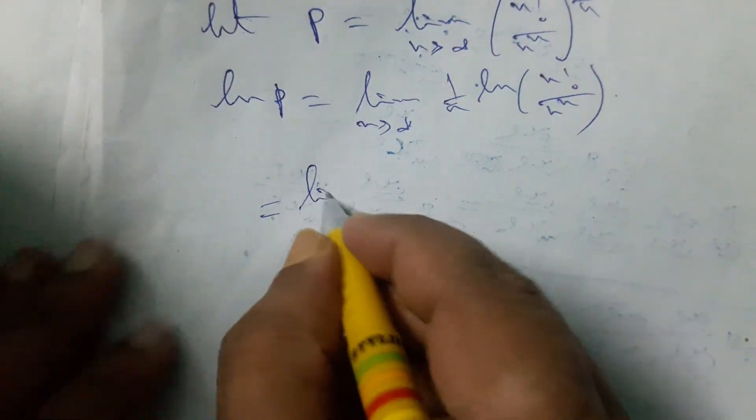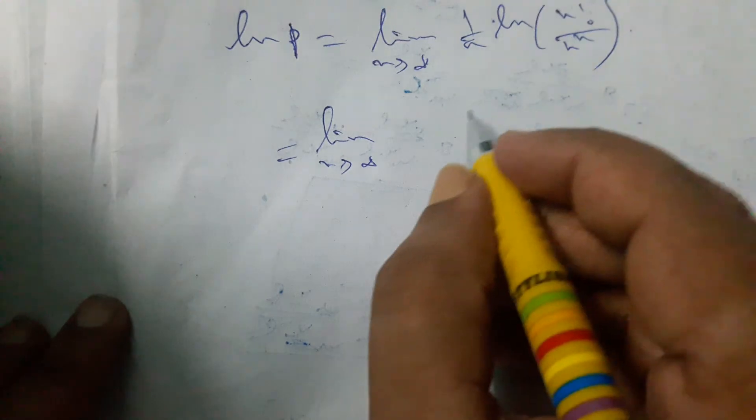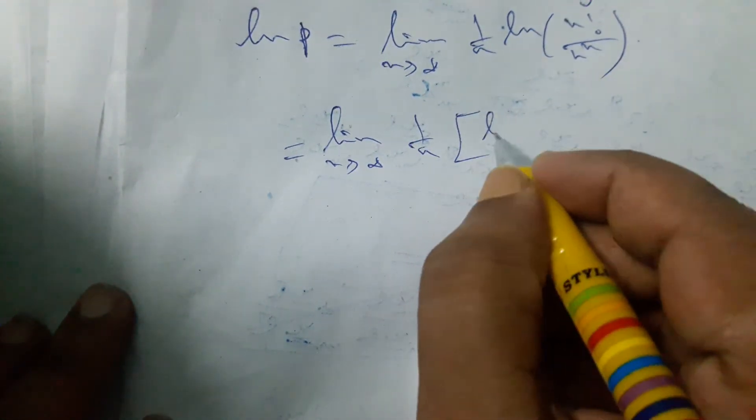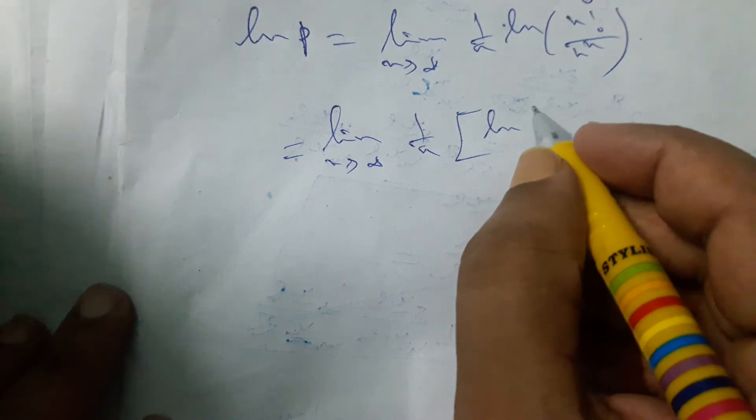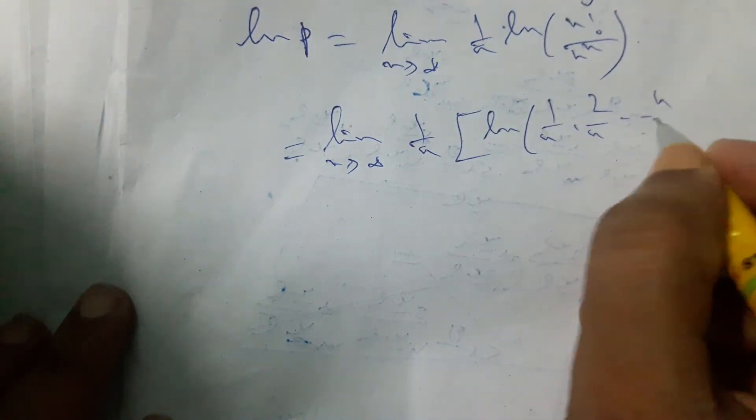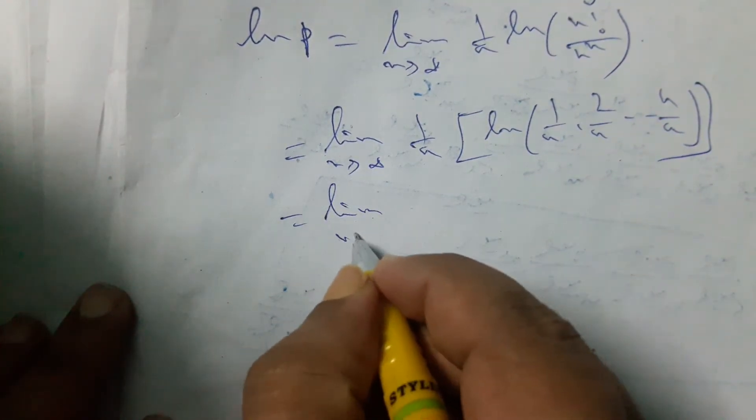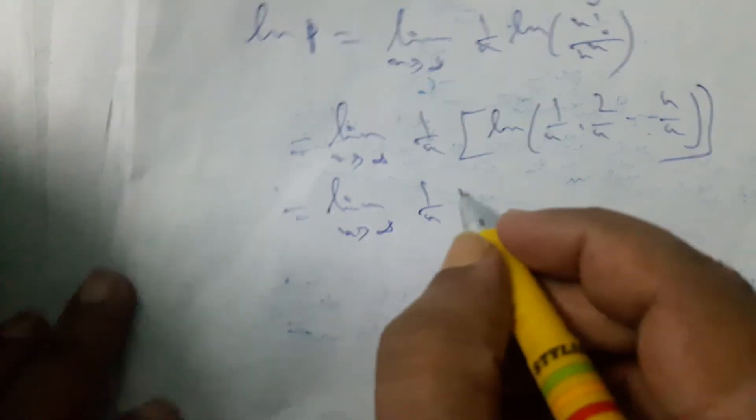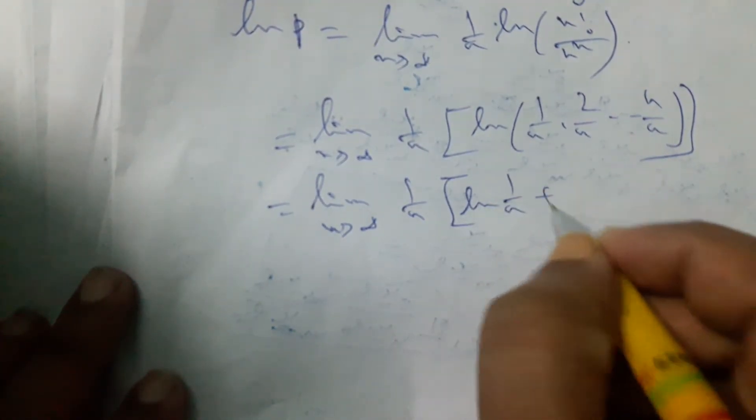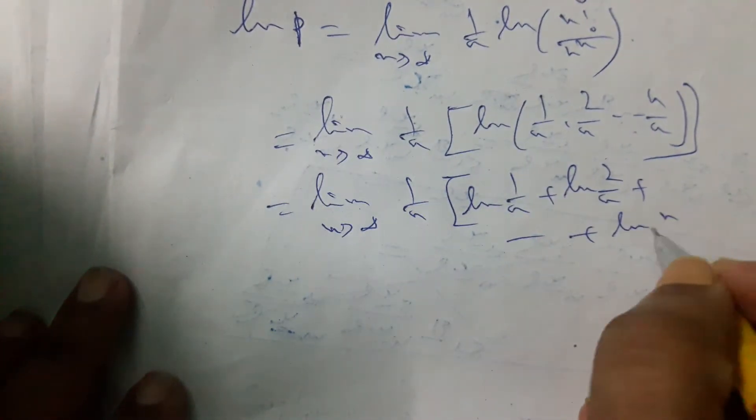It can be written as limit as n tends to infinity, 1 by n, ln of 1 by n, 2 by n, dot dot dot, n by n. It can also be written as 1 by n, using properties of logarithm, that is ln 1 by n plus ln 2 by n up to ln n by n.